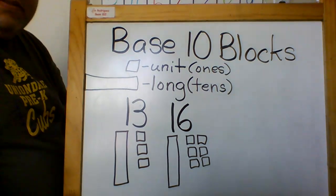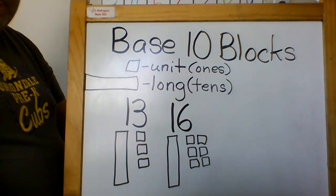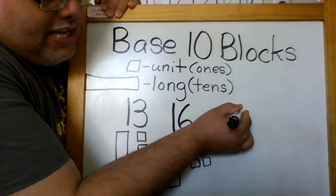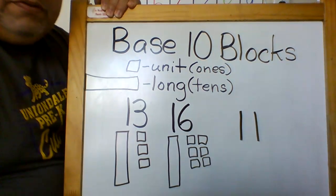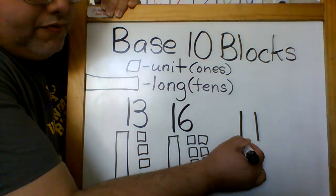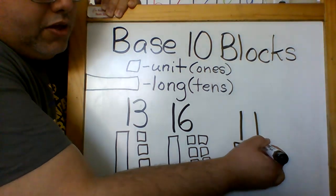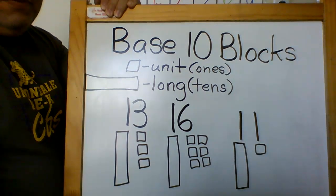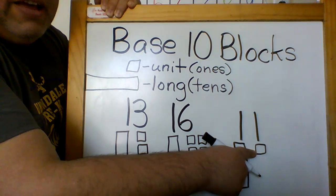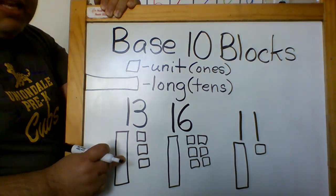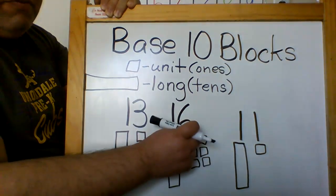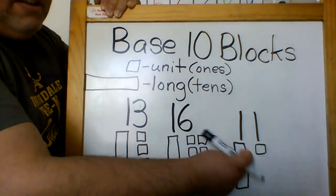If I were to do another number like eleven, eleven would have one long and one cube, or one unit. And so I would say: ten, eleven. That's how you count it — the long counts as ten, then each cube adds one more.